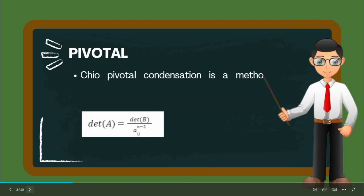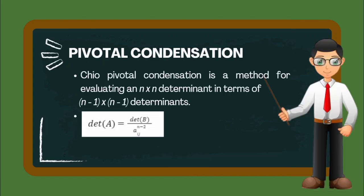Chio pivotal condensation is a method for evaluating an n×n determinant in terms of (n-1)×(n-1) determinants.